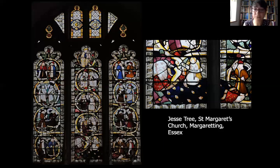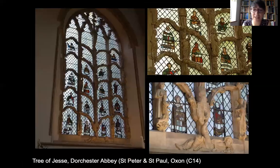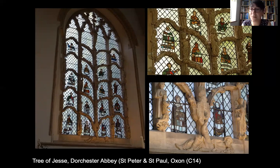I couldn't resist showing you another quite significant and very rare and unusual example at Dorchester Abbey. Here you can see the glaziers and the stonemasons cleverly work together - they actually use the stonework of the window, the mullions, to carve the branches. So the stone becomes the branches of the tree, and then the stained glass in the spaces between shows the figures. It's a wonderful example of how in these buildings stonemasons and glaziers worked together.